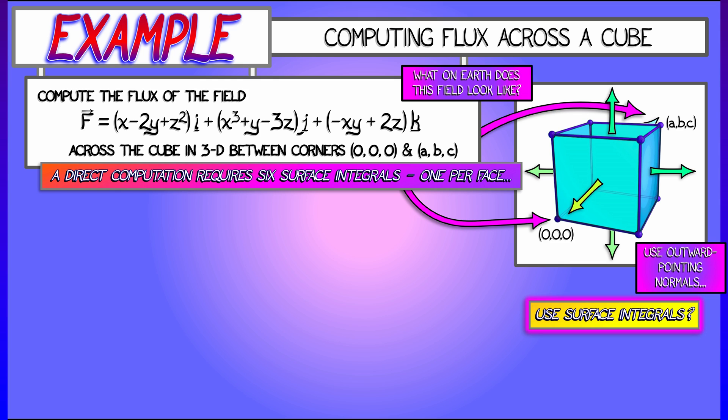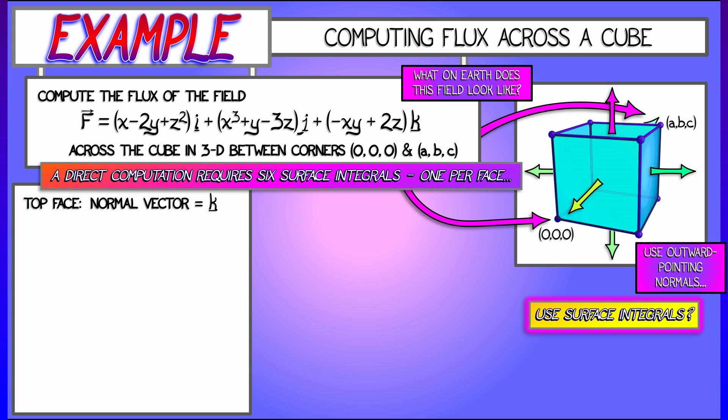So let's try. Let's start with the top face, where the unit normal vector is k. To compute the flux out of that face, I take the dot product of f with that unit normal vector k, and then integrate over that rectangular region where z is equal to a constant. If we do that, if we take that k component, that is 2z - xy, z is a constant, it's equal to c, I have to do that integral.